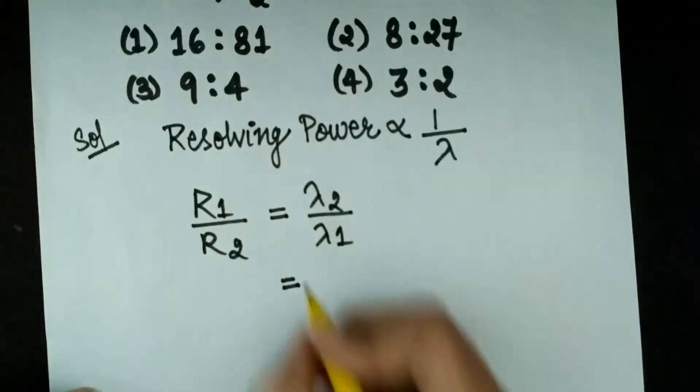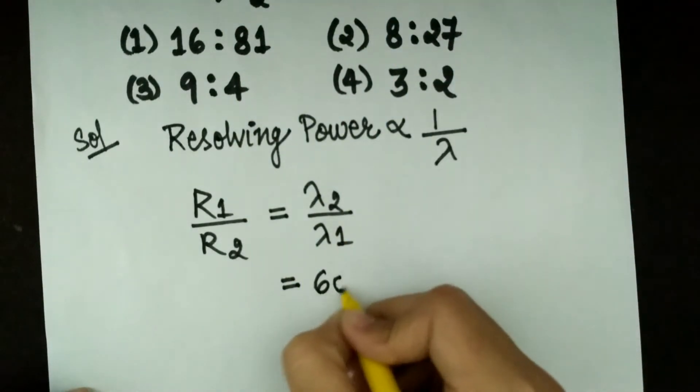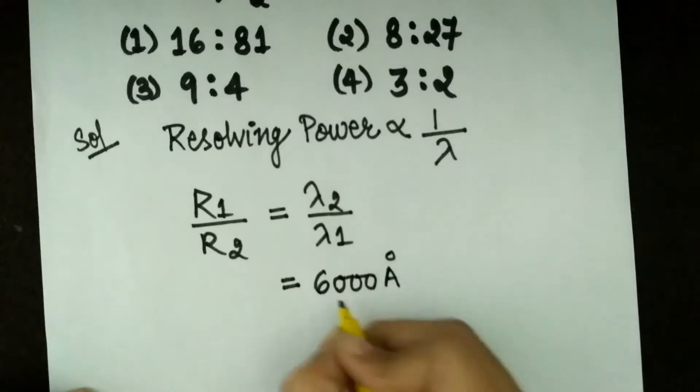As we know, lambda 2 is 6000 angstrom and lambda 1 is 4000 angstrom.